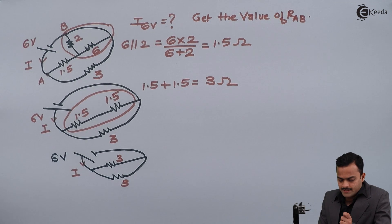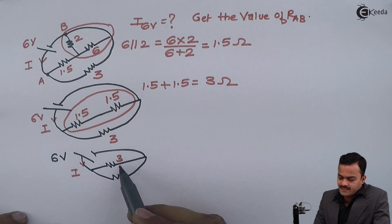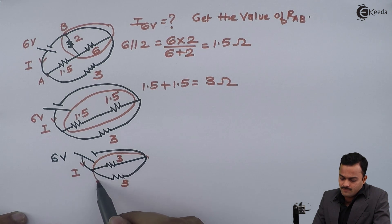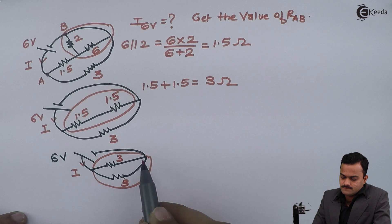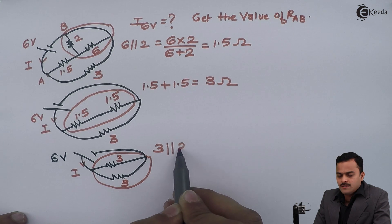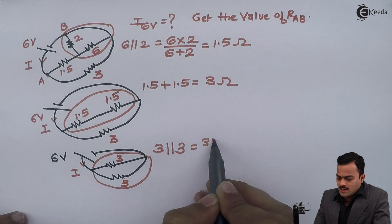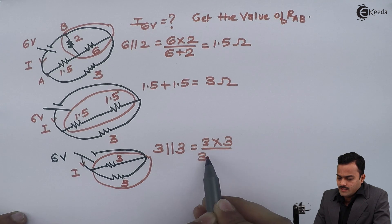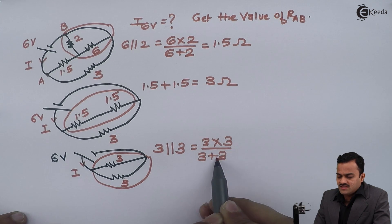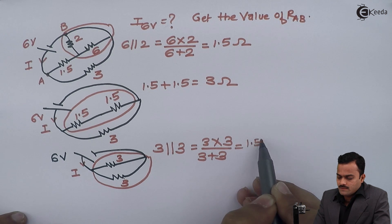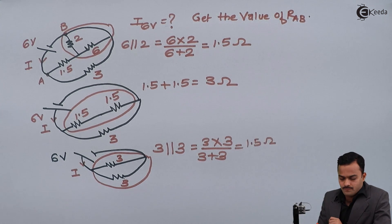Now again we apply the concept: this 3 ohm and that 3 ohm are forming a loop, hence they are in parallel. So 3 parallel with 3 gives 3 multiplied by 3 divided by 3 plus 3, and the answer is 1.5 ohm.